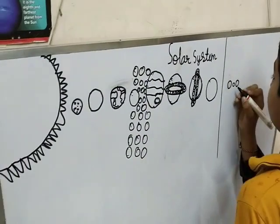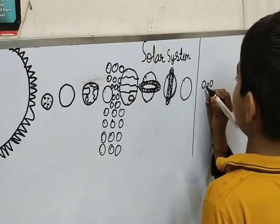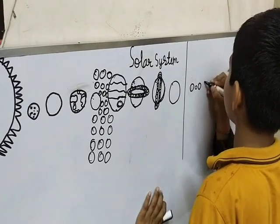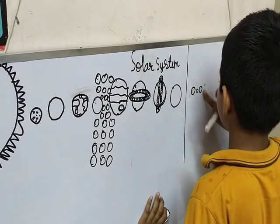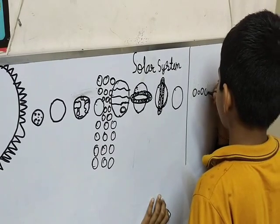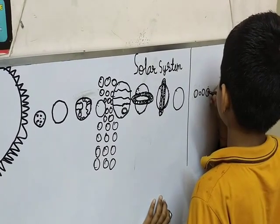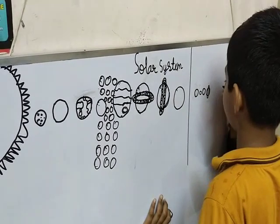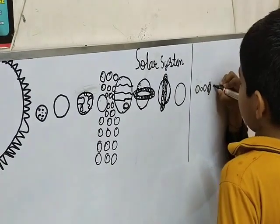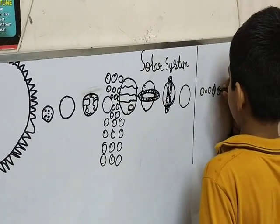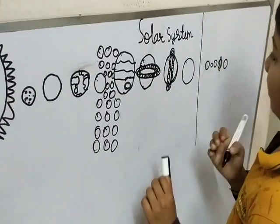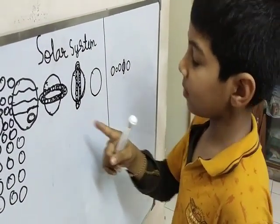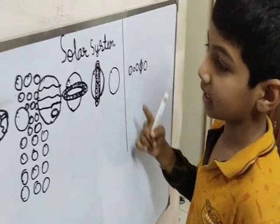Now this is Pluto, Ceres... now Ceres, Eris. This is the dwarf planets and this is the main planets and this is the dwarf planets. That's the end.